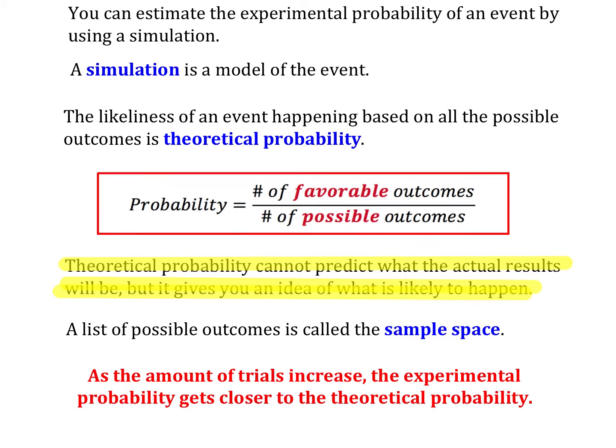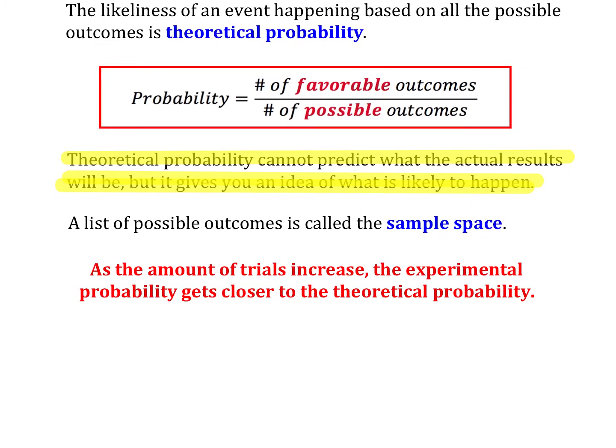Now, down here in red, we have a little blurb, and it says as the amount of trials increases, the experimental probability gets closer to the theoretical probability. And what that means is if I flip a coin, let's say, 10 times, in theory, half of those times should be heads, half should be tails. That's not necessarily guaranteed to happen. I might get 3 and 7, or I might get 2 and 8. But if I were to flip a coin 10,000 times, the ratio of tails or heads to the total should get closer and closer to that half-and-half relationship.